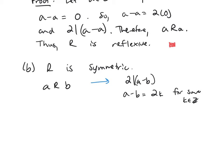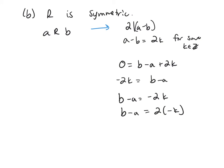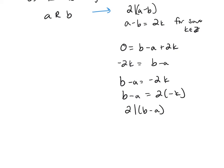Moving terms over, we get zero equals B minus A plus two K, so negative two K equals B minus A. That means B minus A equals two times negative K, and since negative K is an integer, two divides B minus A. So yes, R is symmetric.